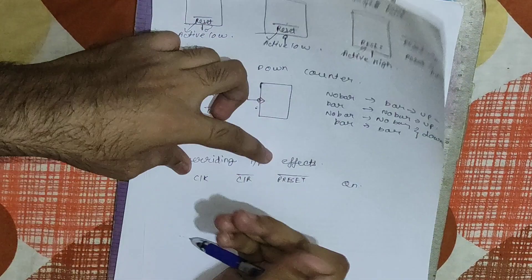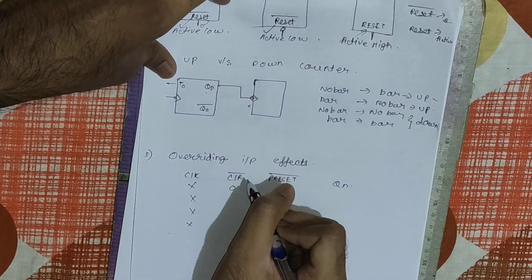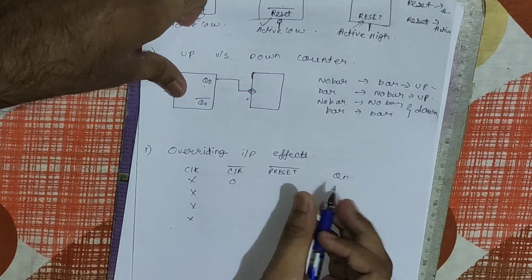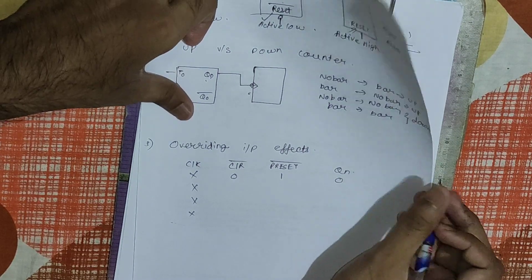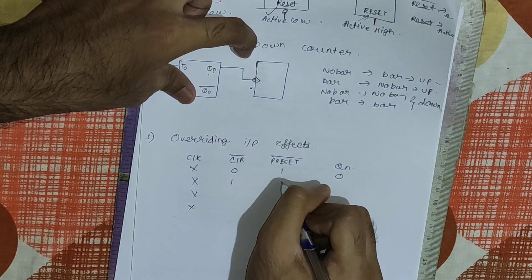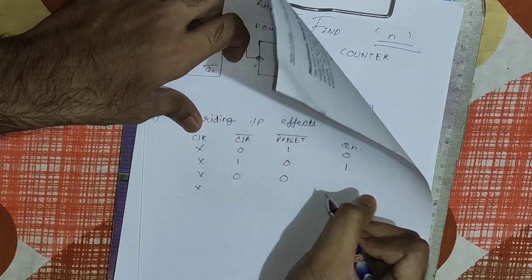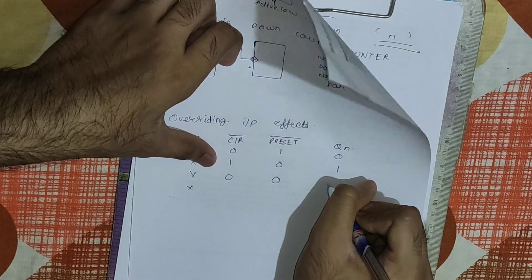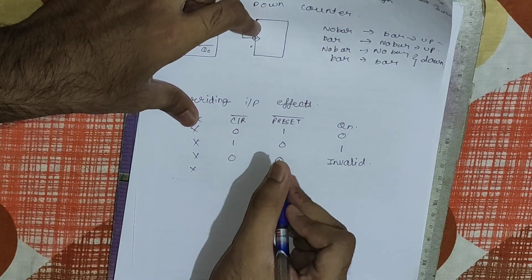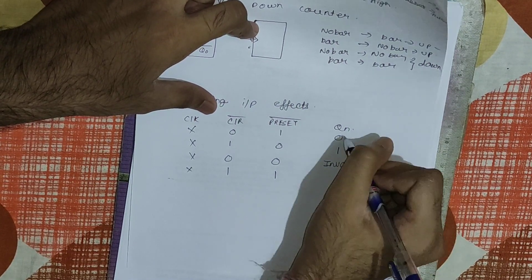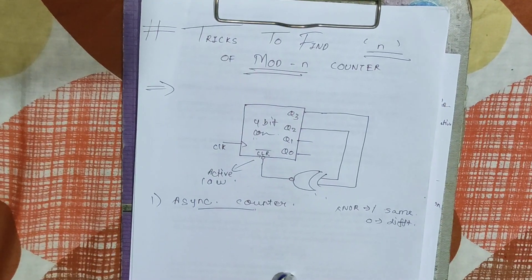The third doubt is about the effect of overriding inputs. If the clock is don't care and clear-bar is zero while preset-bar is one, the output will be zero — the output gets cleared. If clear-bar is one and preset-bar is zero, the output will be one. If both clear-bar and preset-bar are zero, the state of the flip-flop is invalid and cannot be determined. If both are one, the output depends on the input.